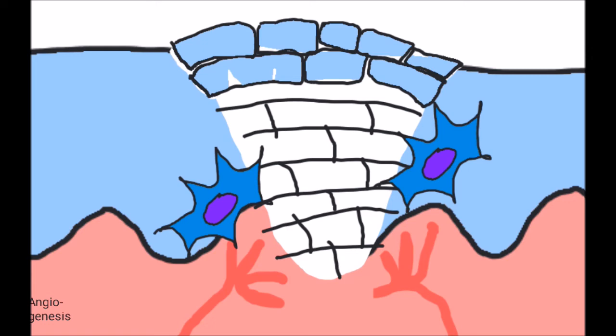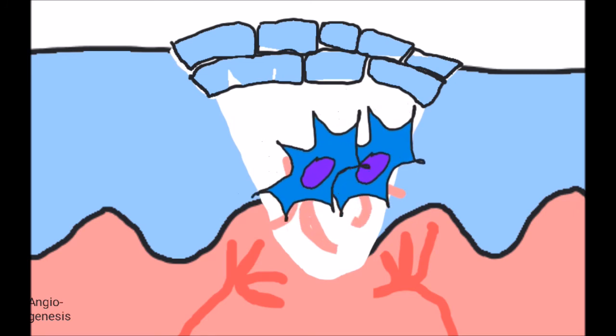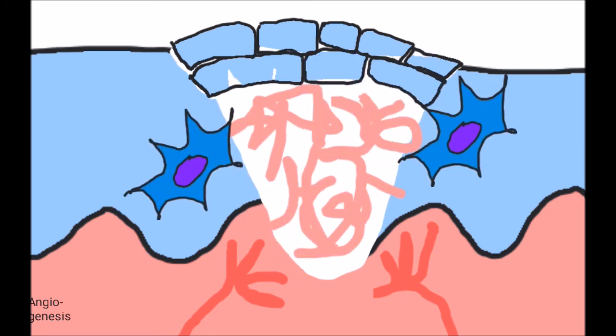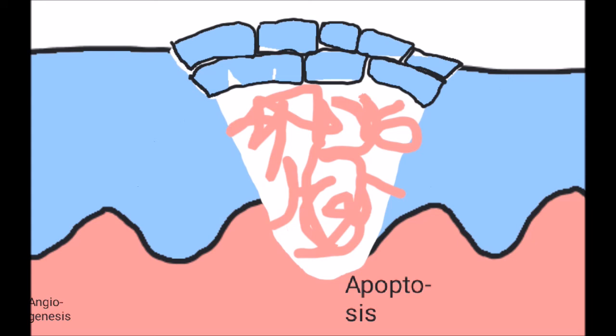Over time, the remodeling phase can occur. Fibroblasts may replace some of the scar tissue with dense irregular connective tissue, and the blood vessels, which are no longer needed, can be removed by apoptosis or programmed cell death. If the entire scar is not remodeled, then we would be left with a whitish appearing scar. That whiteness due to the fact that the scar tissue is a different type of tissue than we had here originally.